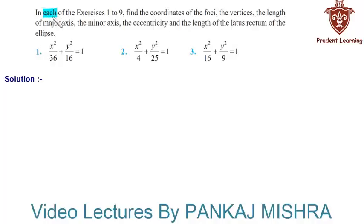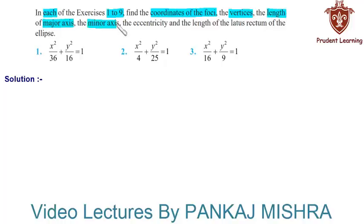In each of the exercises 1 to 9, find the coordinates of the foci, the vertices, the length of the major axis, the minor axis, the eccentricity, and the length of the latus rectum of the ellipse. Let us proceed with the solution of each question one by one.